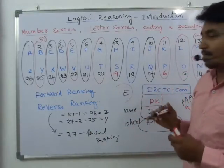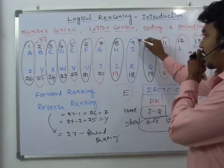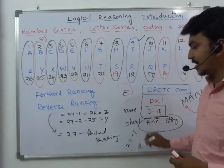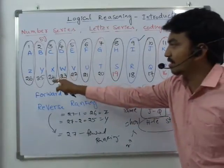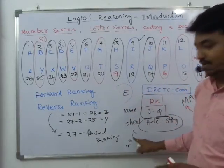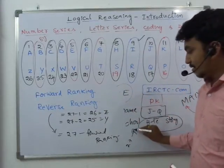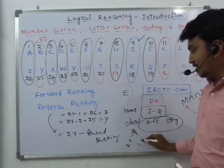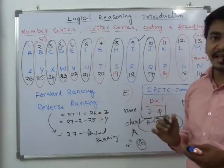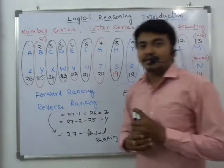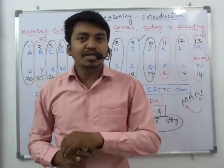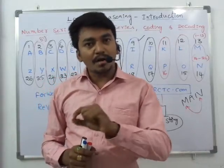So if you want to find the reverse rank of I — I's forward rank is 9, so 27 minus 9 equals 18. Instead of counting the letters from the end, you can simply use 27 minus the original forward ranking. This is the way to find positions of letters in the reverse direction.